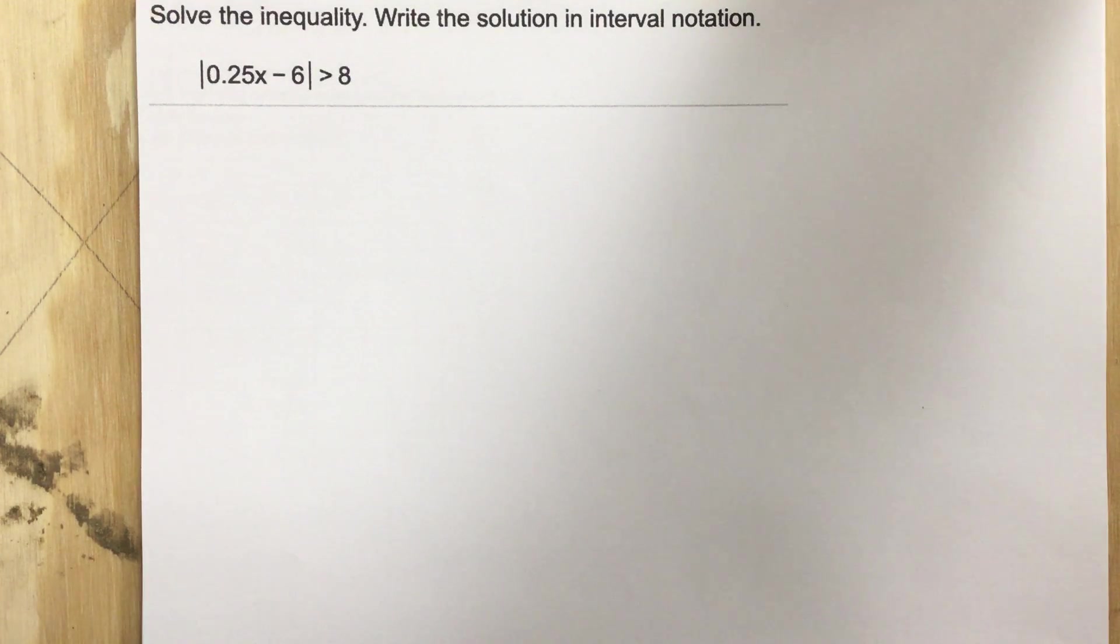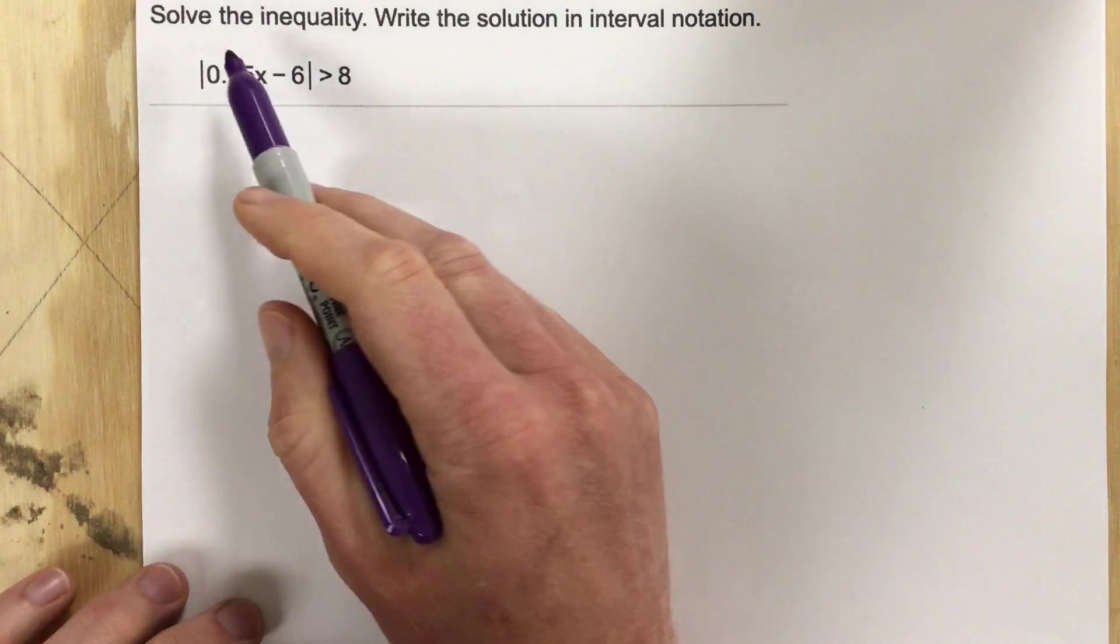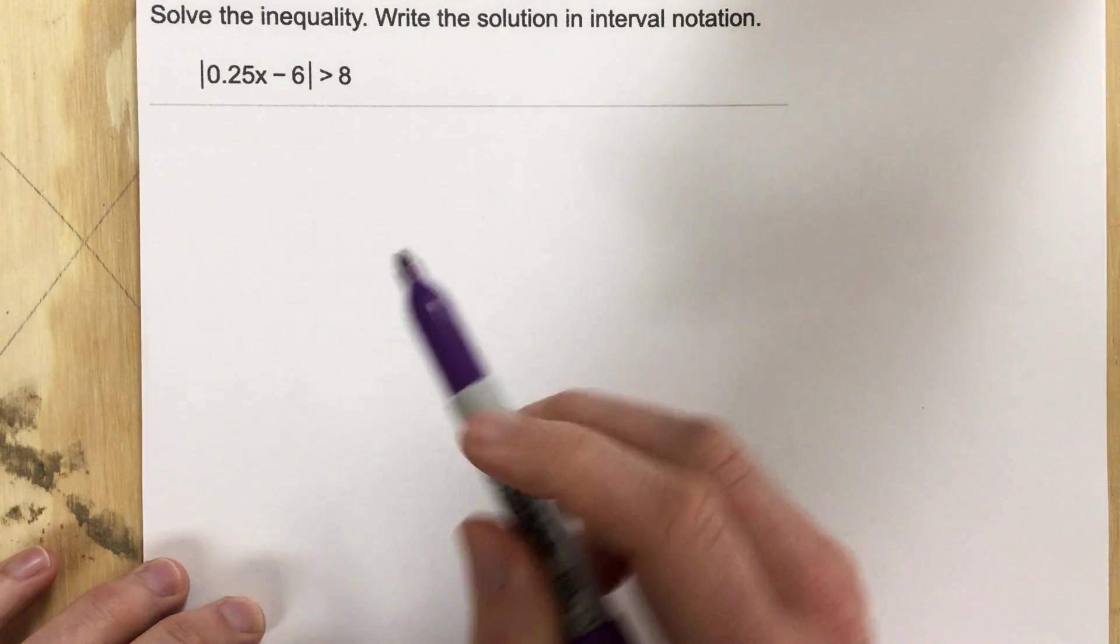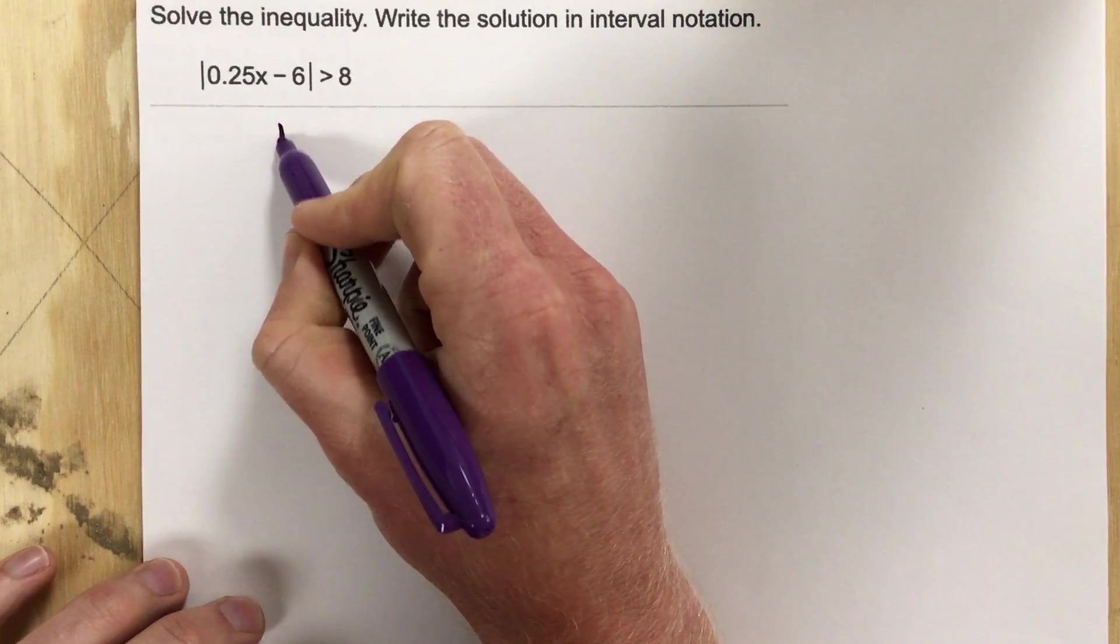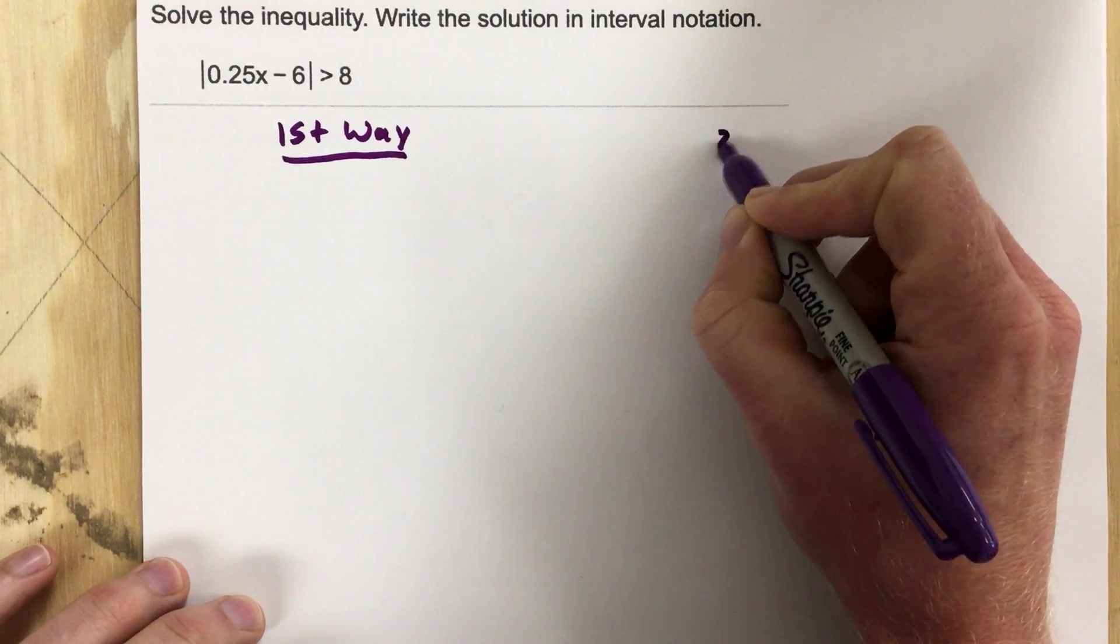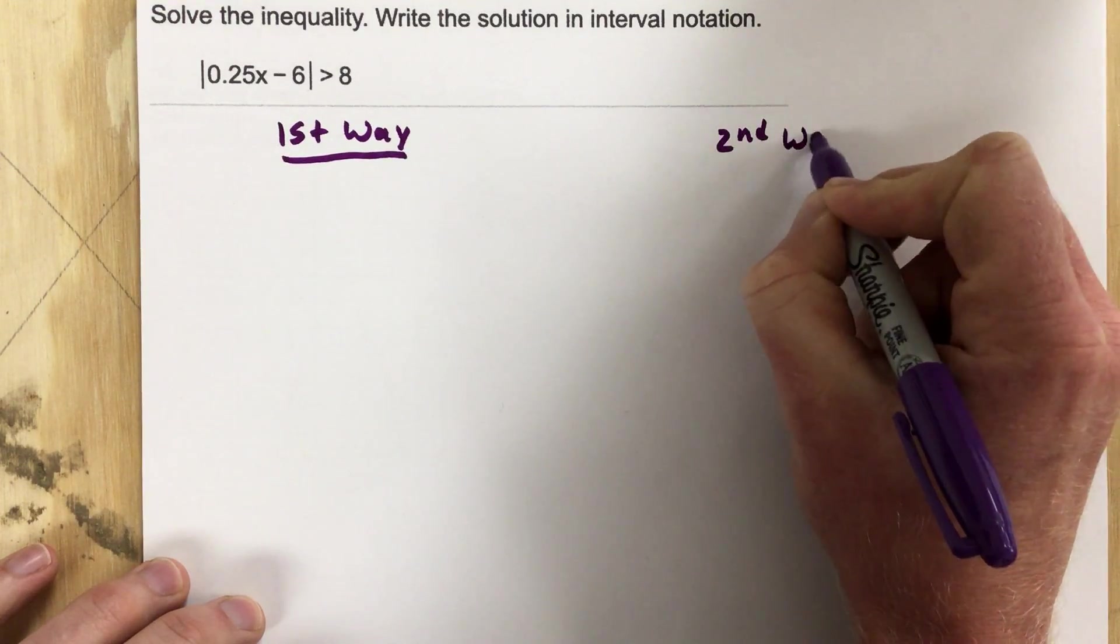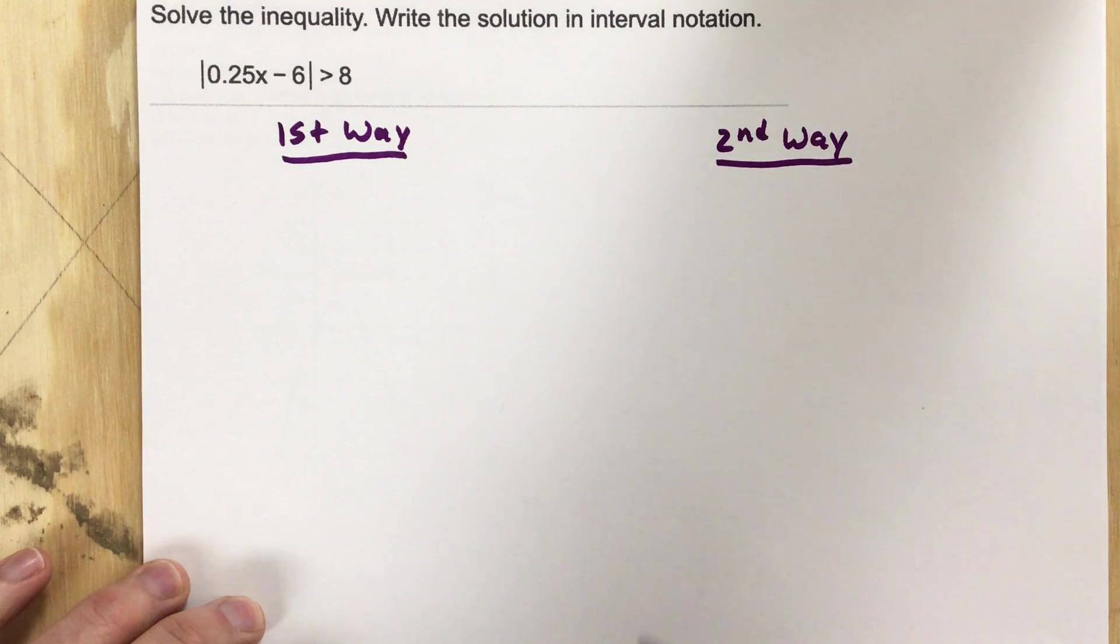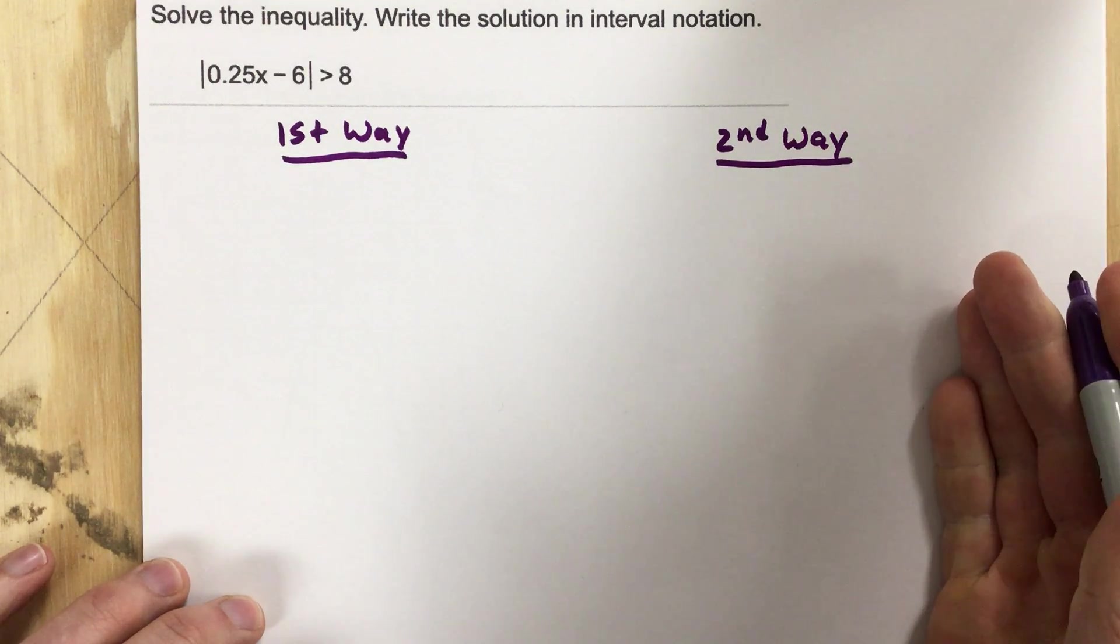This is problem number three for assessment number four. In this problem it says solve the inequality, write the solution in interval notation. I'm going to show you two ways to do this problem. So here's the first way and here's the second. The first way we're going to use an algebraic approach, and the second way we're going to use a graphical approach.